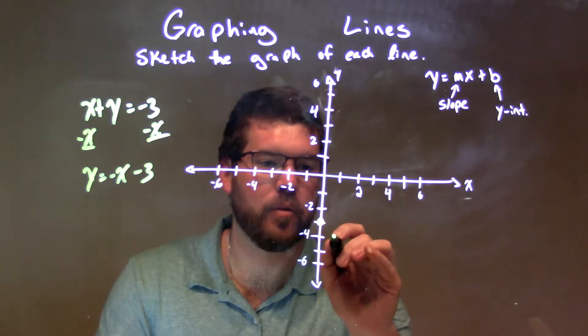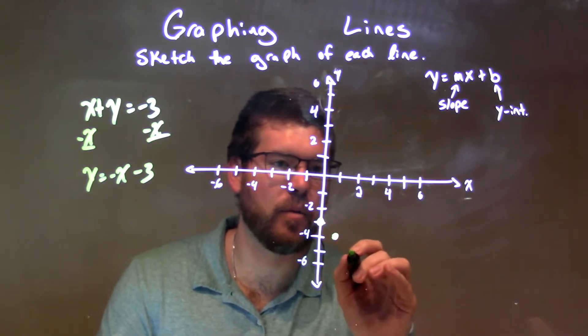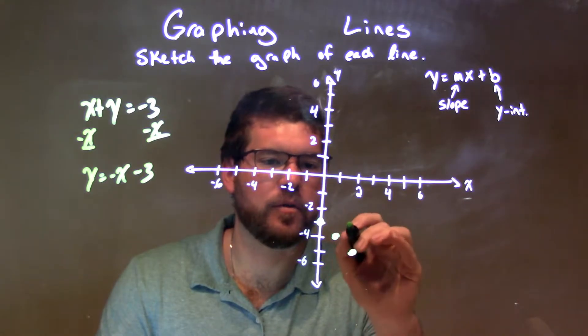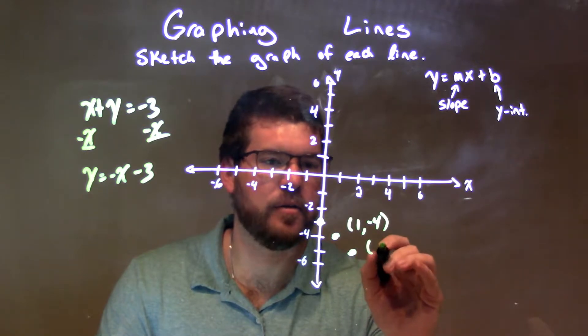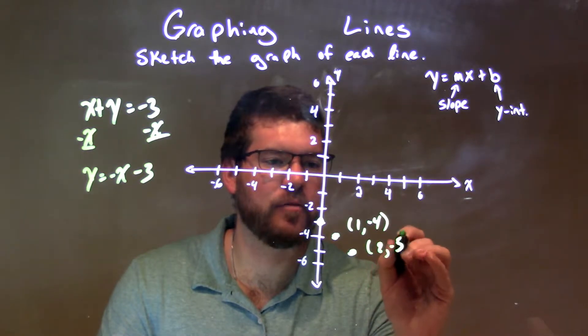We've got down 1, over 1, down 1, over 1. So at this point, this first one here is around 1, negative 4, and this one here is 2, negative 5.